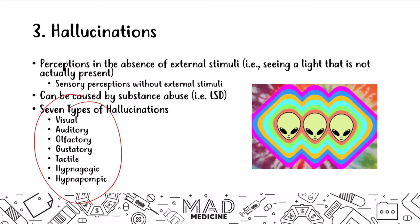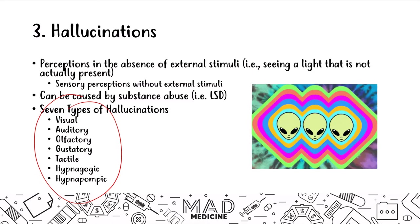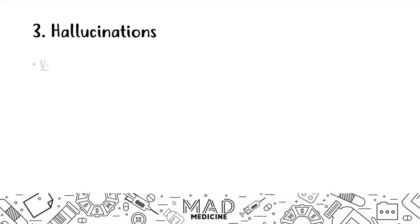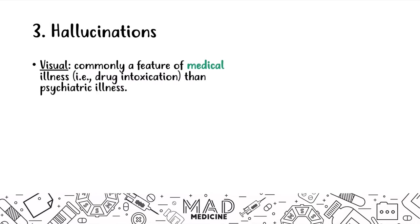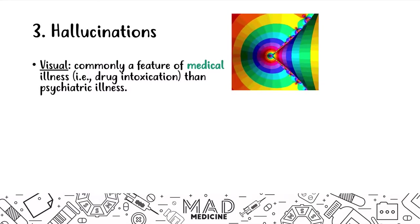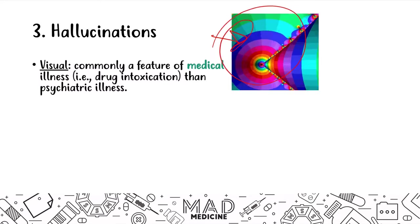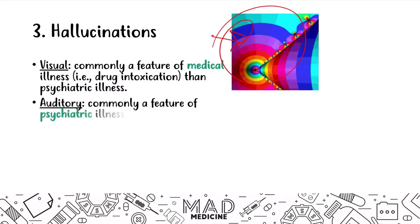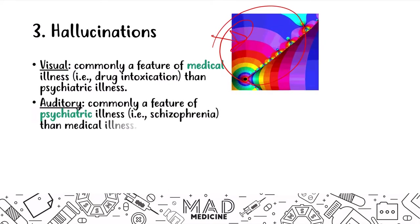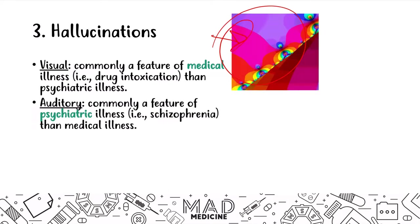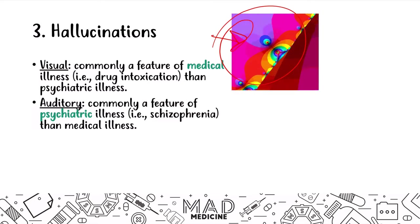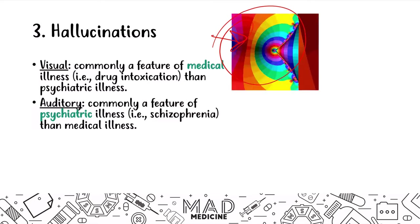The first and most common type is visual hallucination. This is commonly a form seen with medical illness like intoxication — if they just got out of surgery and are a little psychotic, it's probably because of drug intoxication, or if they're taking LSD, they're going to have visual hallucinations. The next type is auditory hallucinations, which is a feature of psychiatric illness like schizophrenia. Schizophrenics might say 'the voices in my head are telling me to do this and that' — that's auditory, and that's more of a psychiatric illness.